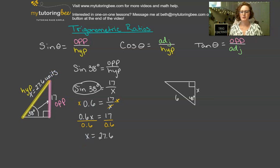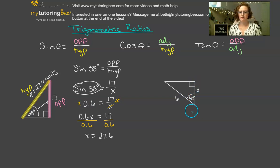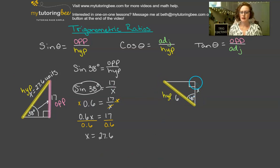Now let's look at another example. Again, here we have a right triangle. We are told that this angle's measurement is 40 degrees. We know that the length of the hypotenuse is 6, and then we want to find this length x over here. We know again that this longest side of the triangle is the hypotenuse. And if we look at this side, it is the other side that creates that 40 degree angle, so this is going to be our adjacent side.